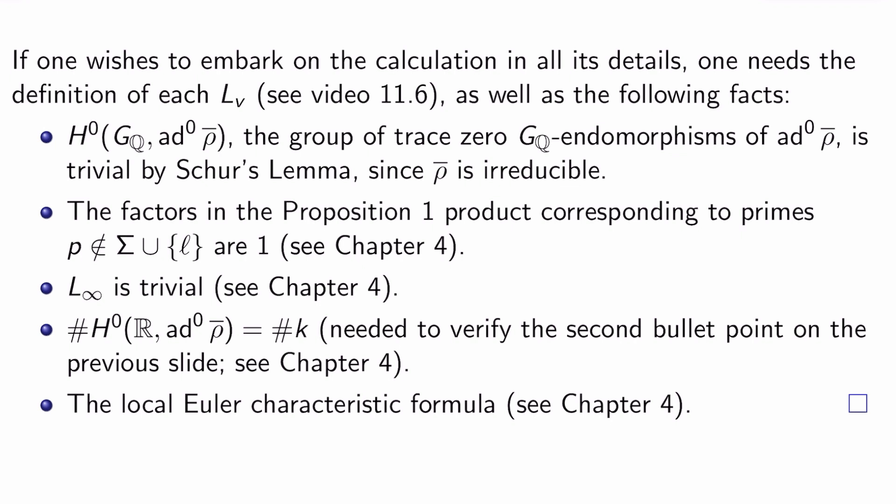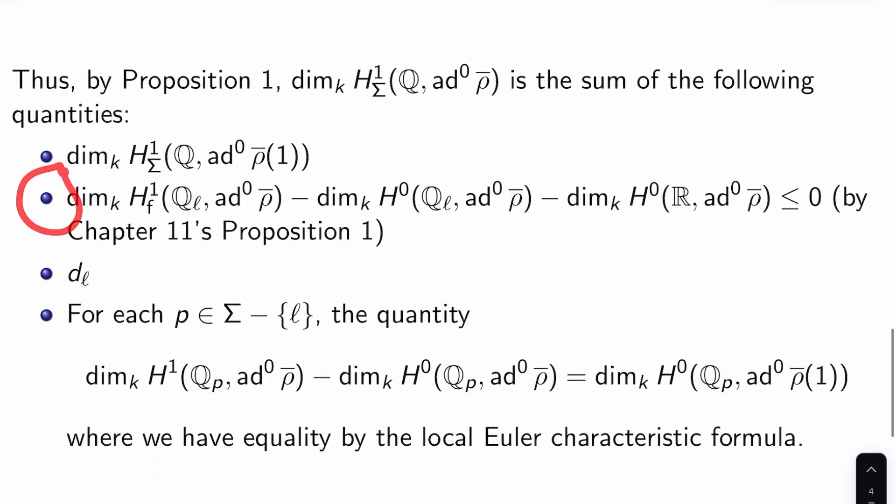And then you're going to need all of the following facts. First, you have to recall that H^0(G_Q, ad^0 ρ̄), which is the group of trace zero G_Q endomorphisms of ad^0 ρ̄, is trivial by Schur's Lemma, since ρ̄ is irreducible. The second thing you need to know is that the factors in the Proposition 1 product corresponding to primes p not equal to l and not in Σ are 1. And we proved that back in Chapter 4 of this playlist. You also need to know that L_∞, the local condition at the infinite place, is trivial. That was also proven in Chapter 4.